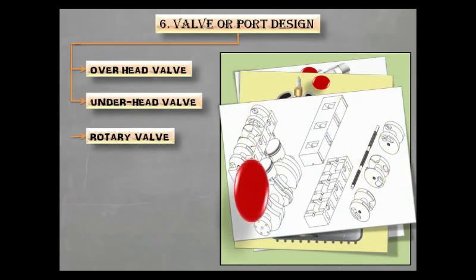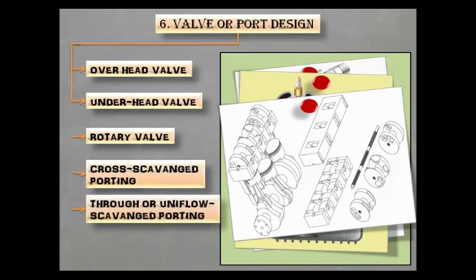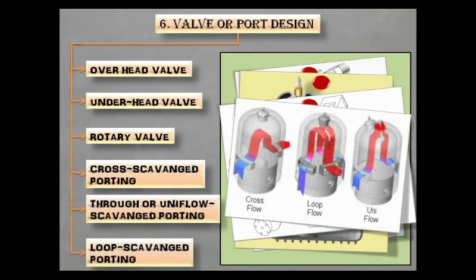Third is the rotary valve. A rotary valve is a type of valve in which the rotation of the passage or passages in a transverse plug regulates the flow of liquid or gas to the attached pipes. Other three types of valve or port design are cross scavenged, through or uniflow scavenged, and loop scavenged porting. These are used mainly in two stroke internal combustion engine. The direction of flow after scavenged determines the type of porting.